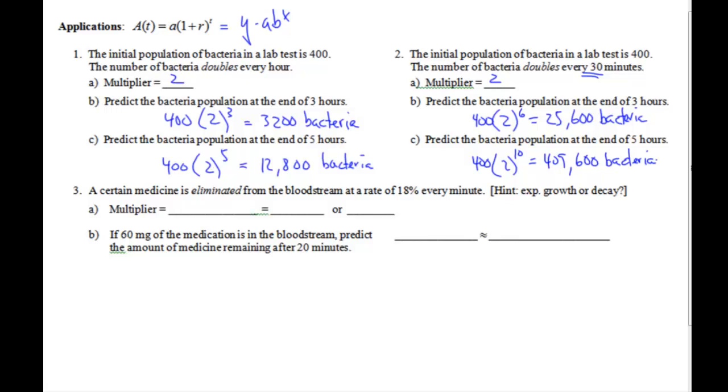Number 3. A certain medicine is eliminated from the bloodstream at a rate of 18% every minute. Hint: exponential decay. So as soon as we see this word eliminated, we've got to think you are losing amounts. So you're not going to have that 100% medicine within your bloodstream at a certain time. We're going to decrease. So we're going to start with 100%, and we're decreasing 18%, which means we retain 82% left every minute. So change the 82% to a decimal, so it's 0.82.